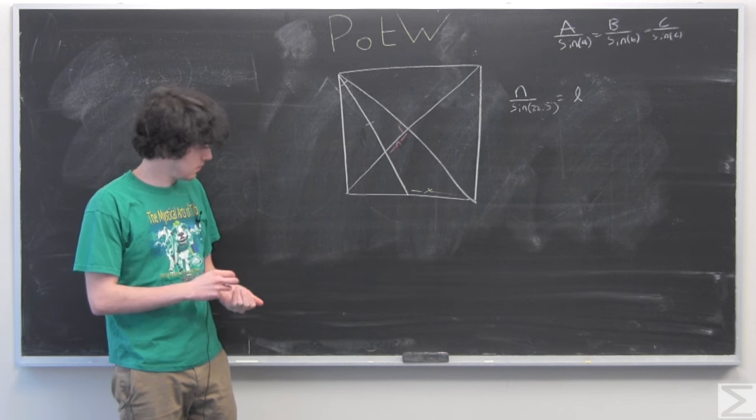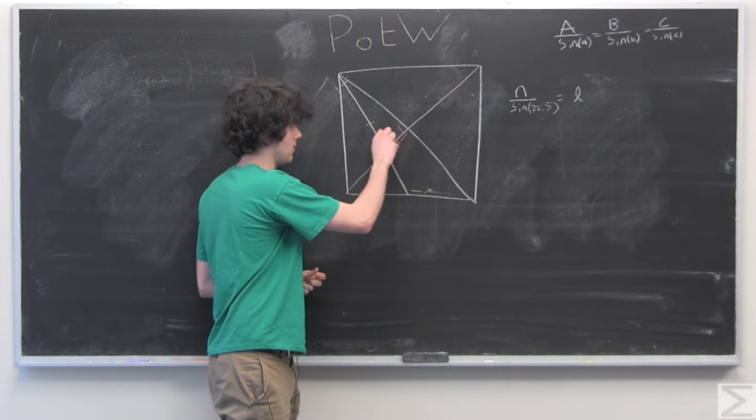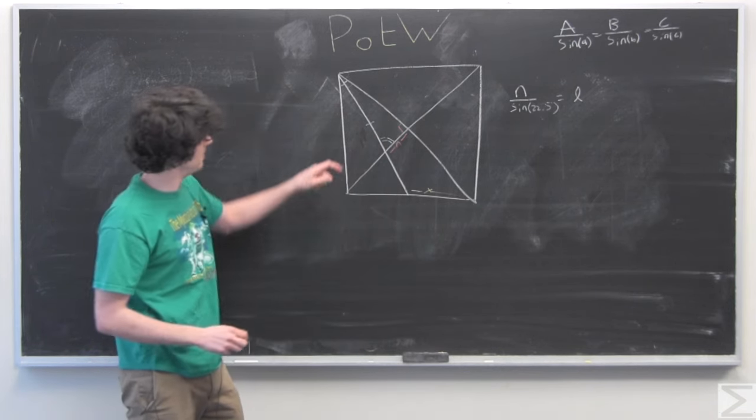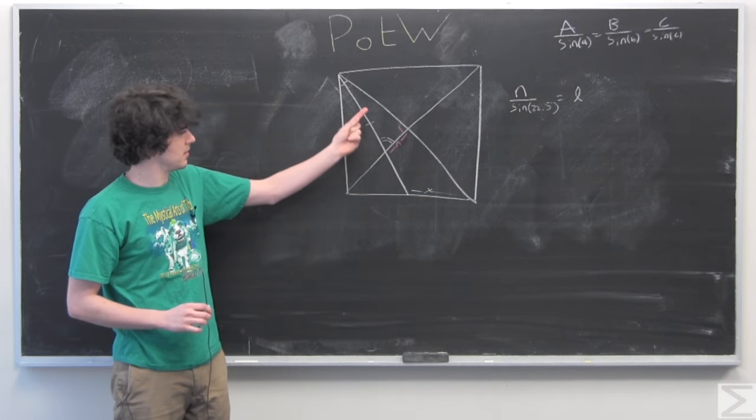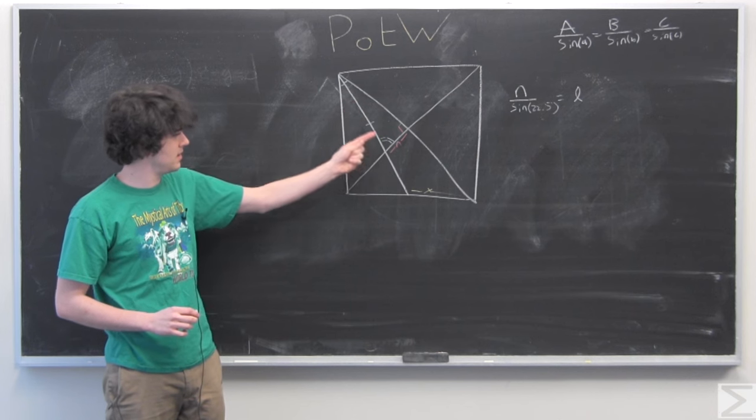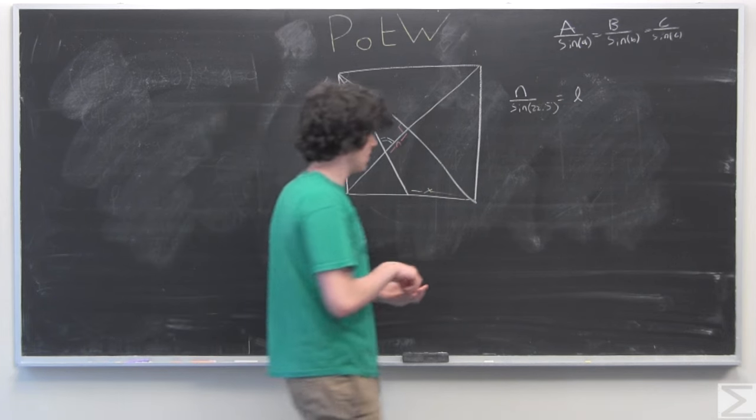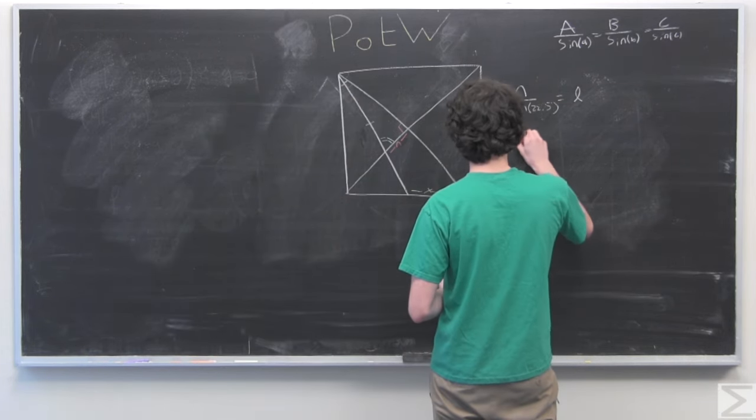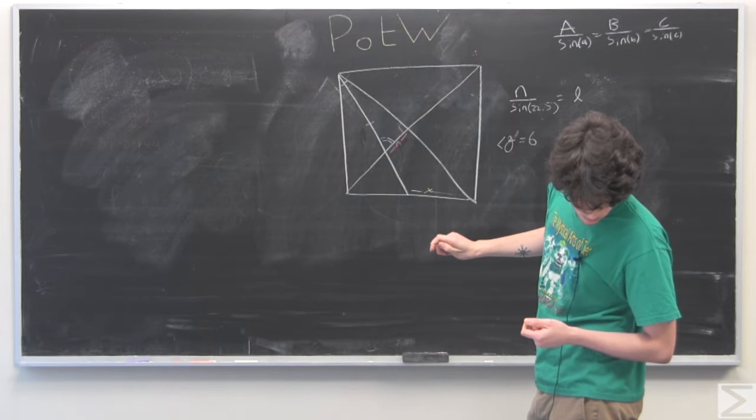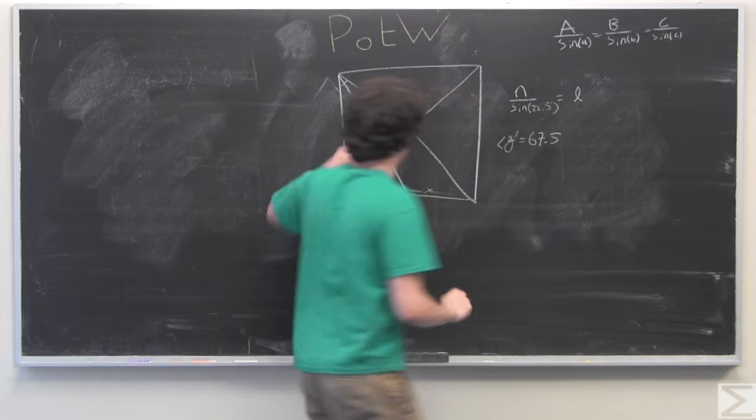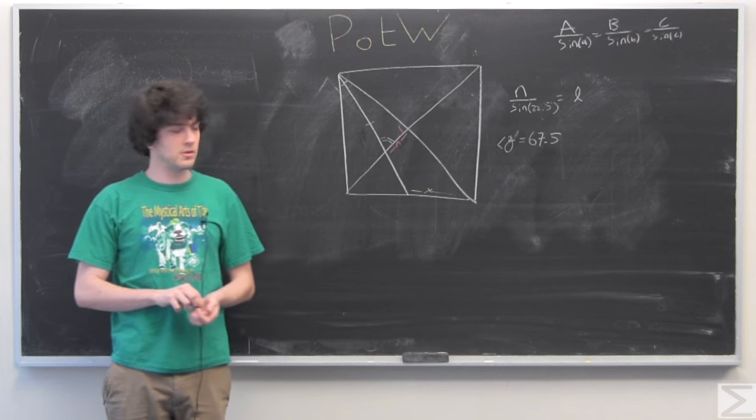So we can also find this angle here by subtracting 22.5 and 90 from 180. So we'll call this angle G, which is 67.5 degrees.